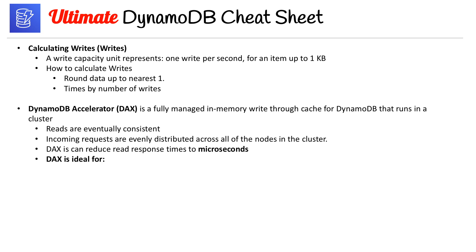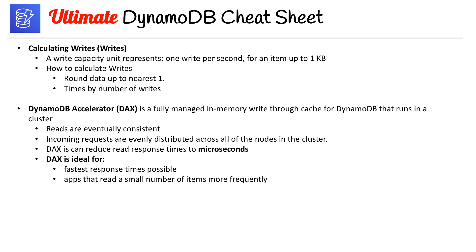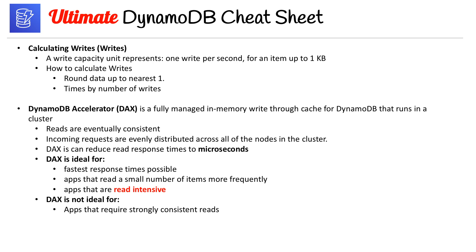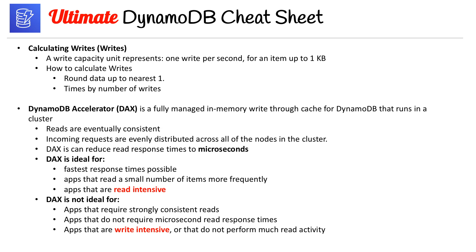Reads in DAX are eventually consistent, and incoming requests are evenly distributed across all nodes in the cluster. DAX can reduce read response times to microseconds. DAX is ideal for: the fastest response times possible, apps that read a small number of items more frequently, and apps that are read-intensive. DAX is not ideal for: apps that require strongly consistent reads, apps that do not require microsecond response times, apps that are write-intensive, or apps that do not perform much read activity.